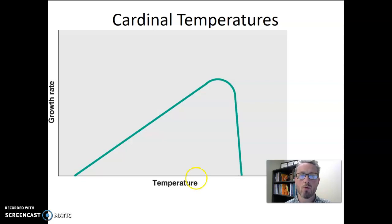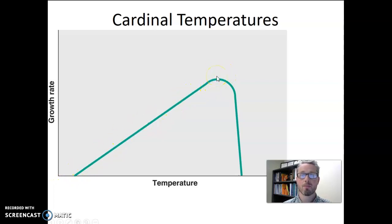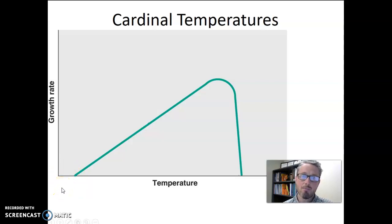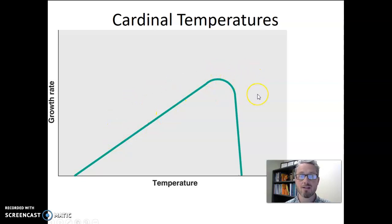Here I'm showing you a growth curve for a microorganism. The line represents the growth rate — the higher the line gets, the better the organism is growing, and the lower the line gets, the worse the organism is growing. If there is no line, that indicates that the organism cannot grow. For any bacteria, we could test its growth in the laboratory at a whole bunch of different temperatures and generate a graph just like this one.